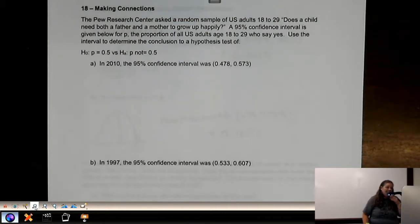In this case, the Pew Research Center asked a random sample of U.S. adults, does a child need both a father and a mother to grow up happily? A 95% confidence interval is given below for P, the proportion of all U.S. adults age 18 to 29 who said yes.